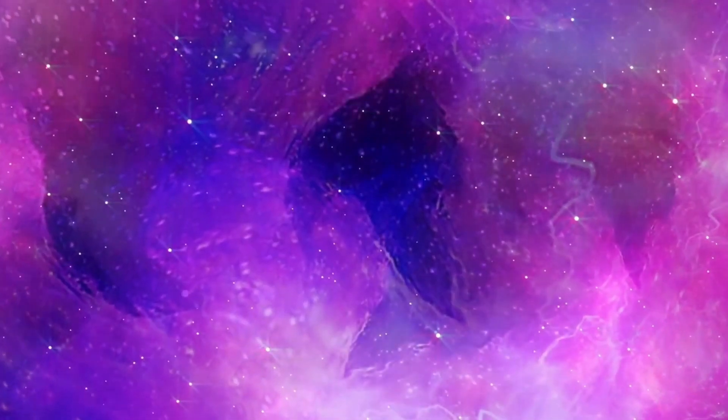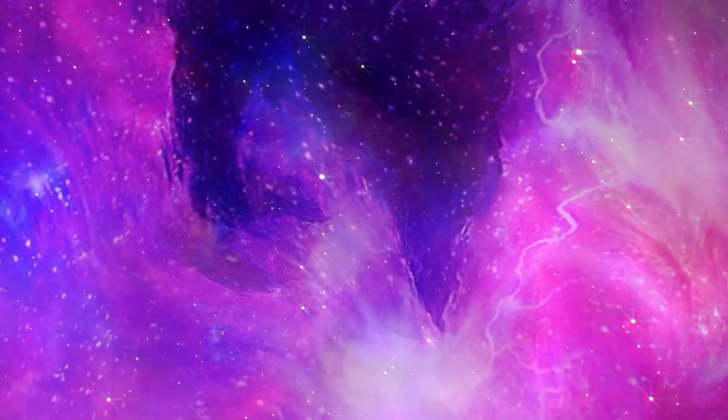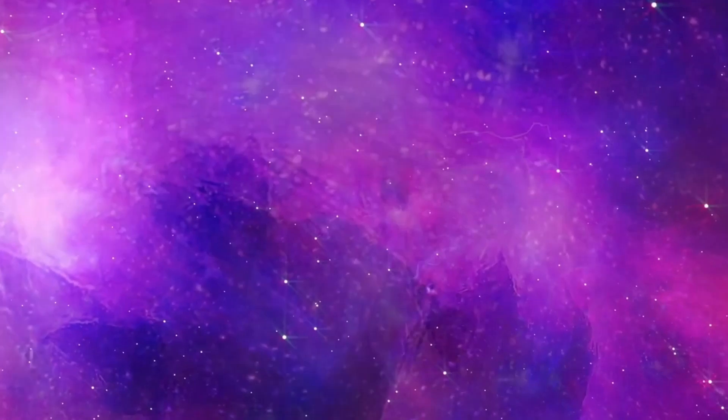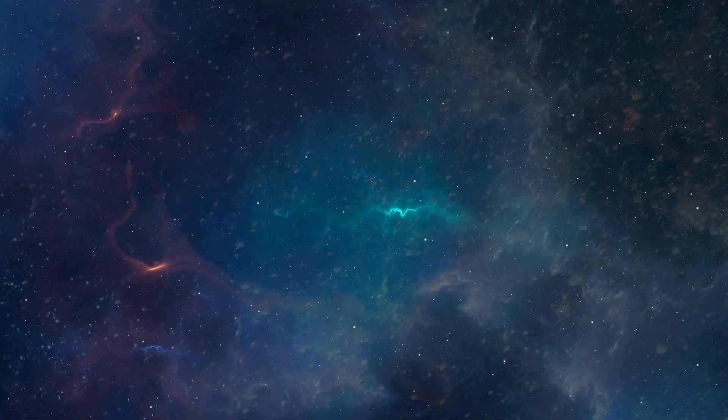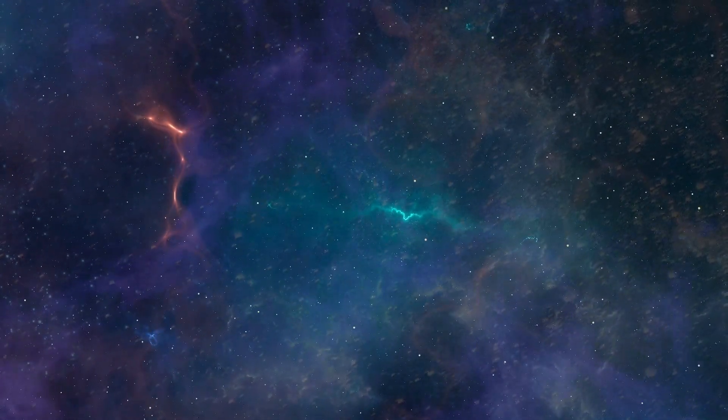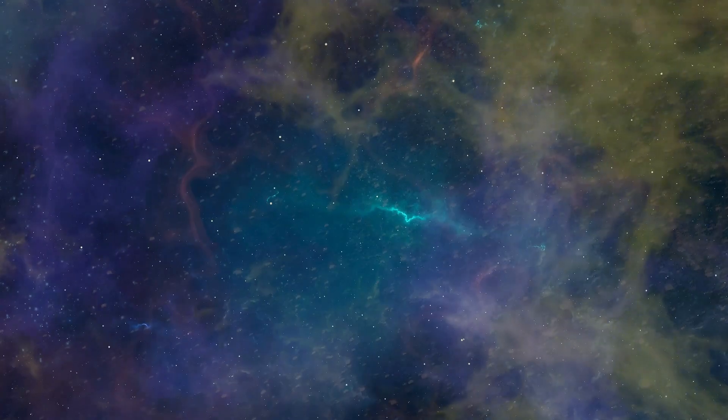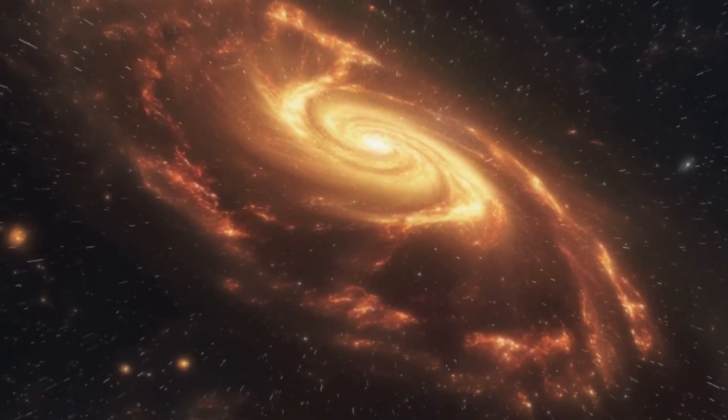As we venture past our solar system, we find a different universe of exoplanets—planets that circle stars other than the Sun. With 200 billion stars in the universe, the possibilities are endless. Some exoplanets even wander aimlessly, untethered to any star, like rebel explorers in space.